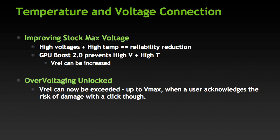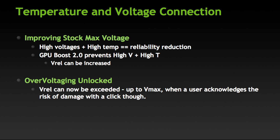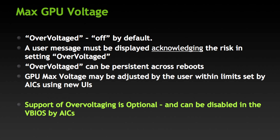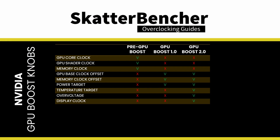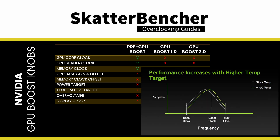According to Nvidia, GPU Boost 2.0 offers two layers of improvements over GPU Boost 1.0. First, a higher default operating voltage enables higher out-of-the-box frequencies at lower temperatures. Second, by allowing ecosystem partners to extend the voltage range to Vmax if the end-user is willing to trade reliability. While it may seem that over-voltage is a welcome return to manual overclocking, Nvidia still determines the voltage range between the reliability voltage and the maximum voltage. Board partners have the option to allow users to access this additional range but cannot customize either voltage limit.